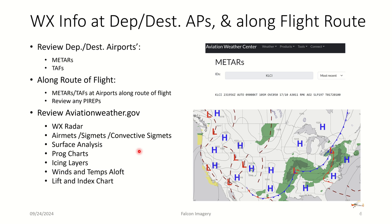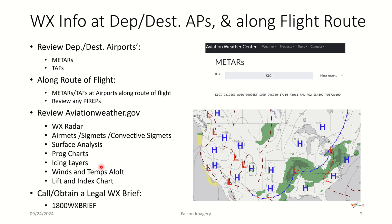You're going to look at airmets, sigmets, and convective sigmets. You're going to look at the surface analysis, the prog charts, icing layers associated with the altitude you expect to fly, and winds and temperatures aloft. You might also want to look at the lift index chart to determine if there's any potential for vertical lift and the threat of thunderstorms during your flight. Lastly, you want to call and obtain a legal weather briefing — the type of briefing that is recorded on file and shows you did due diligence for that cross-country flight planning.